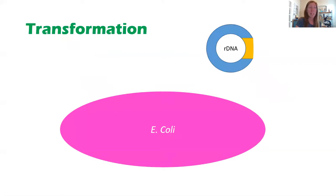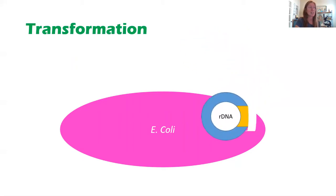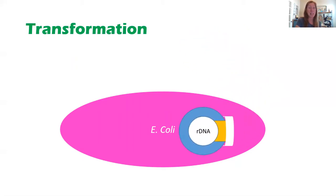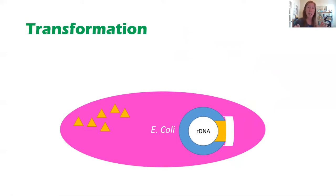The next step is to take that recombinant DNA and get some E. coli bacteria to take it up by transformation. Eventually the E. coli are going to start making the antigen — the little triangles represent the antigen made from this sequence. Now we can crush the E. coli, extract the antigen, purify it, and use it as our vaccine.